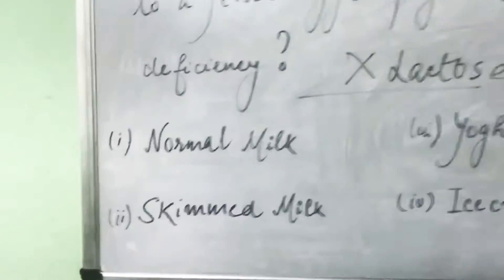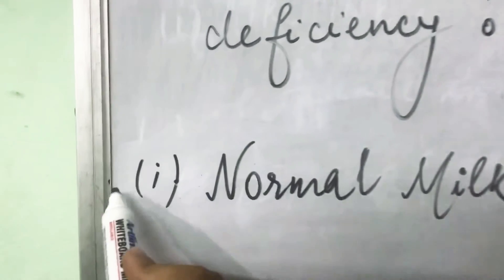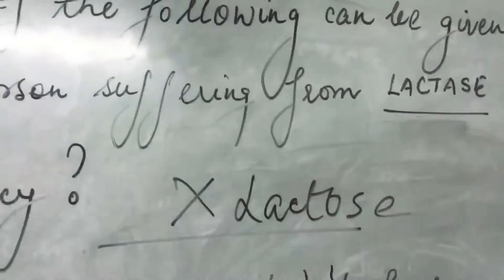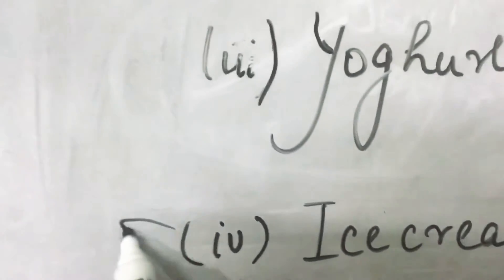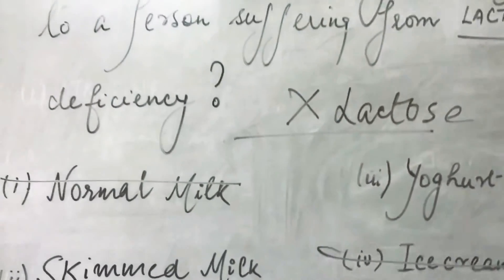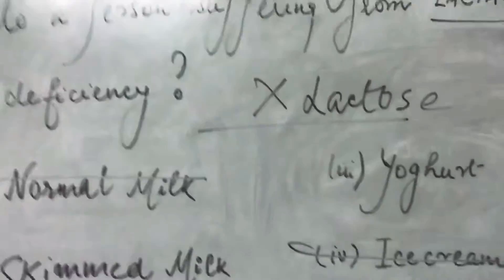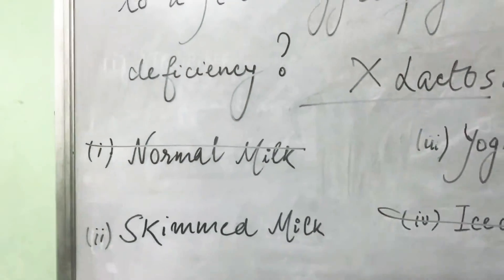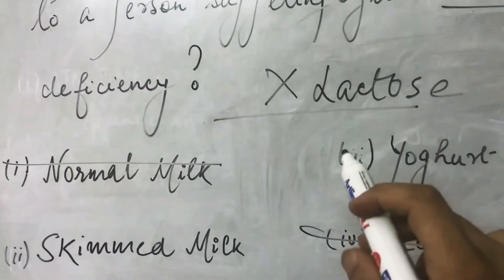We can easily rule out two options. First, normal milk — milk has lactose, so it cannot be given; the person will suffer from diarrhea and bloating. Similarly, ice cream cannot be given, because ice cream is nothing but frozen milk with flavoring and sugar, whether chocolate or vanilla. So we rule out milk and ice cream.